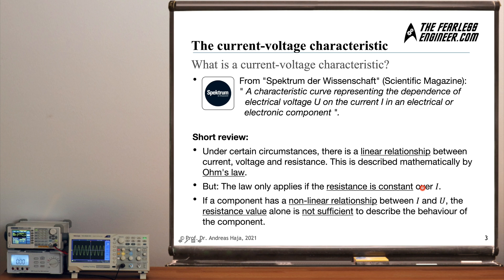If you see a change in the slope of the current voltage characteristic, then you have a component with a so-called non-linear relationship between current and voltage. In that case, the resistance value alone is not sufficient to fully describe the behavior of the component. For an ohmic component with a linear relationship, only the resistance value and the voltage drop are needed to compute the current flow. But for a non-linear relationship, a single value is not sufficient — you need a current voltage characteristic.